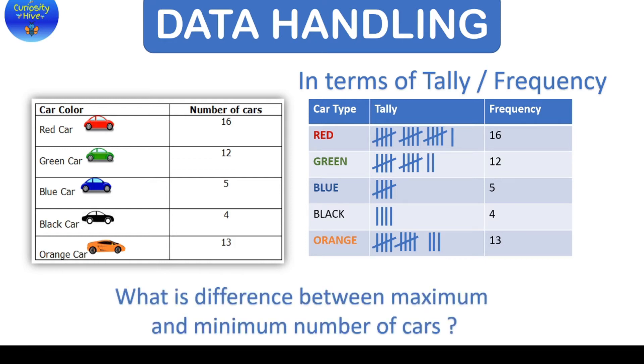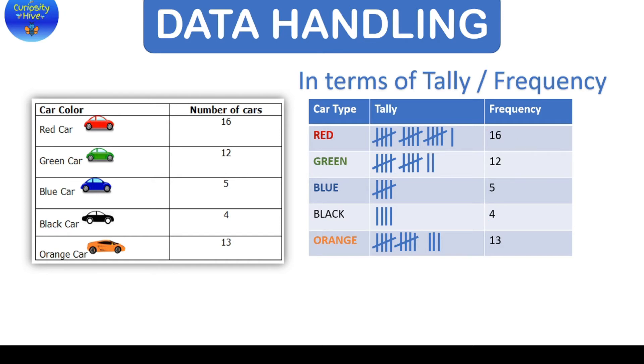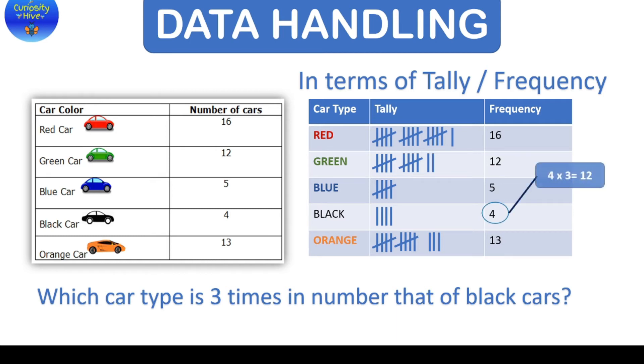Like what is the difference between the maximum and minimum number of cars? Well, from the table now, the maximum number of cars are red which is 16 and the minimum are 4 which is black. And the difference between the two will give us the answer which will be 12. Now, other arithmetic question that could be asked is which car type is 3 times in number that of black cars? Now, black cars is 4 a number and 3 times this number is 12 and 12 points to the green cars number. Hence, the answer here would be green cars.